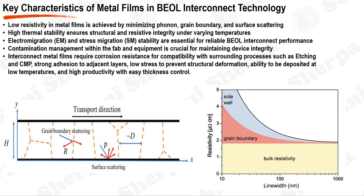Thermal stability is another critical characteristic for metal films in BEOL interconnect technology, as films must maintain structural integrity and resistivity even under thermal stress. Electromigration, EM, and stress migration, SM, stability are also critical factors. EM refers to displacement of metal atoms due to momentum transfer from conducting electrons, while SM refers to movement of atoms within the metal driven by mechanical stress — both can degrade performance and reliability. Contamination spread within the device or equipment must also be managed appropriately depending on whether the contaminant is a non-metal, metal, ruthenium, or copper.